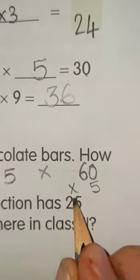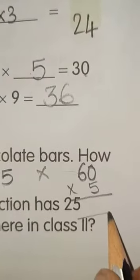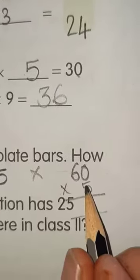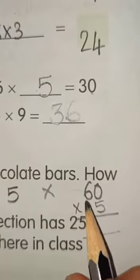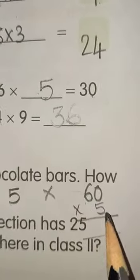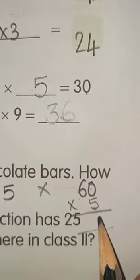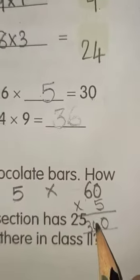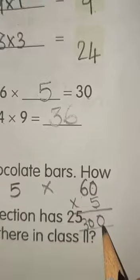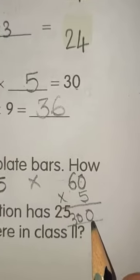So, in multiplication, what you have to do? You have to multiply the number first which is on 1's place. And then, you have to multiply the number which is on 10's place. 5 zeros are 0. 5 sixes are 30. So, there are 300 chocolate bars in all.